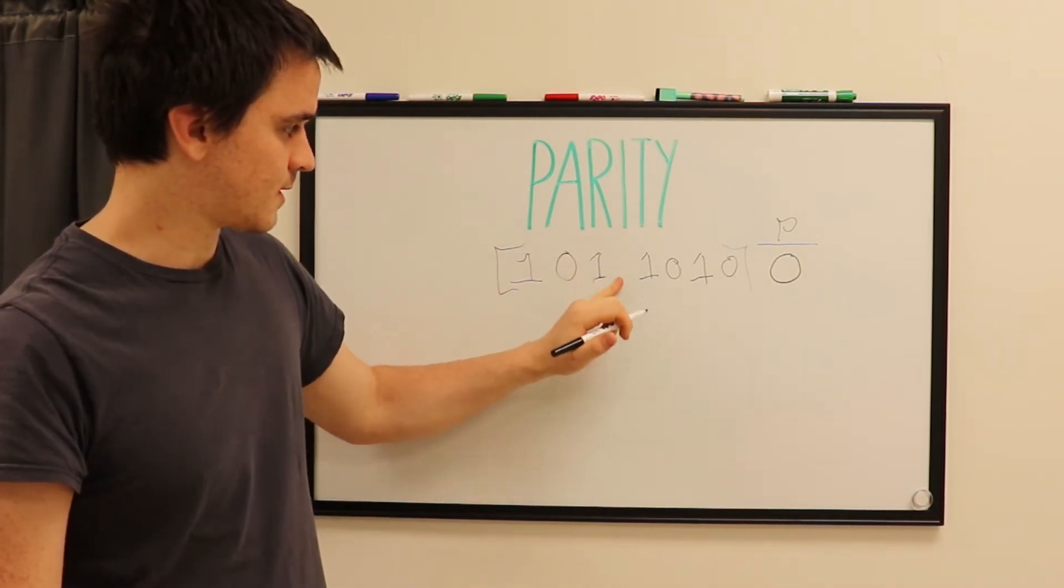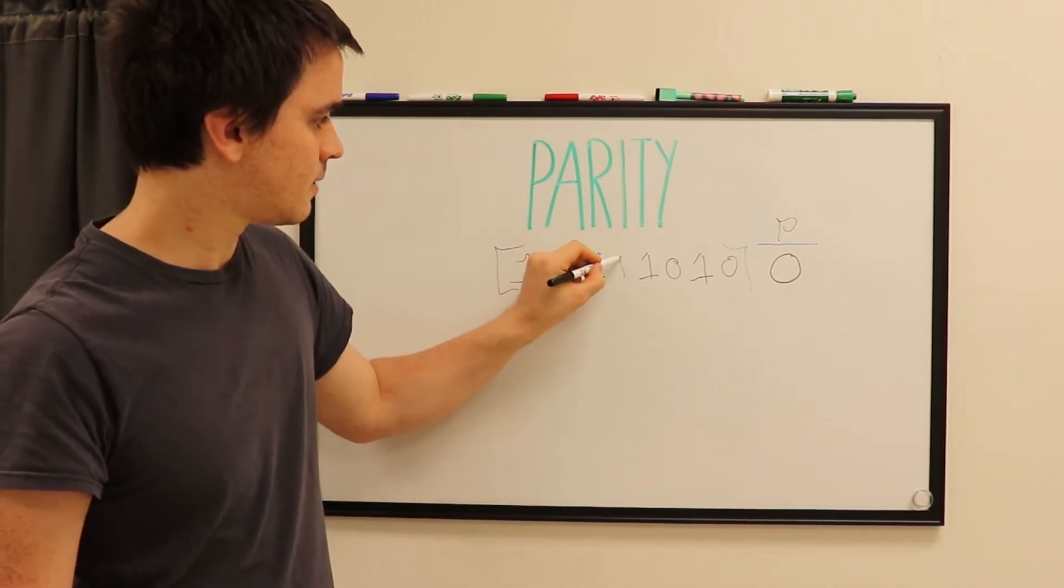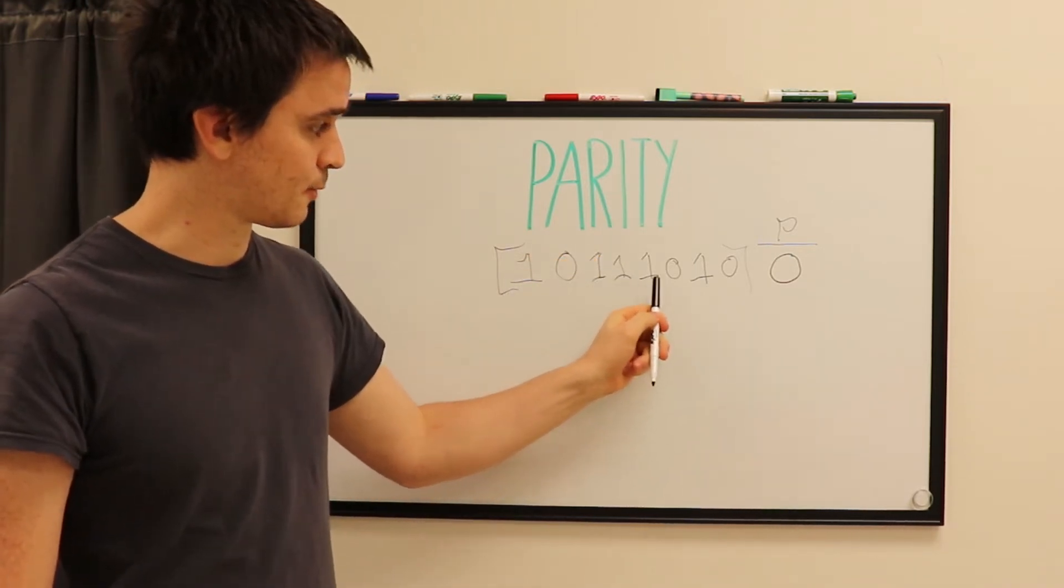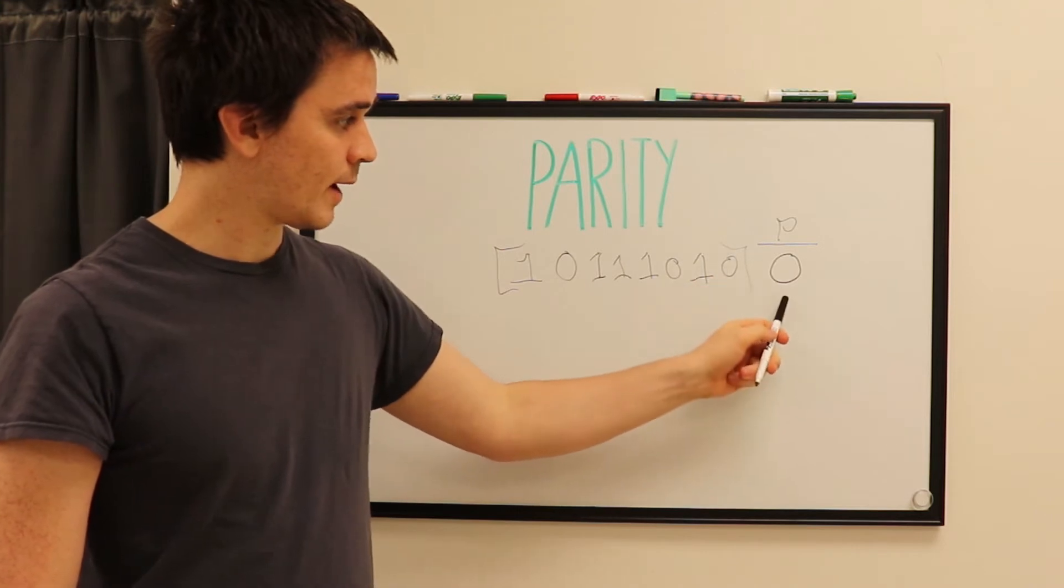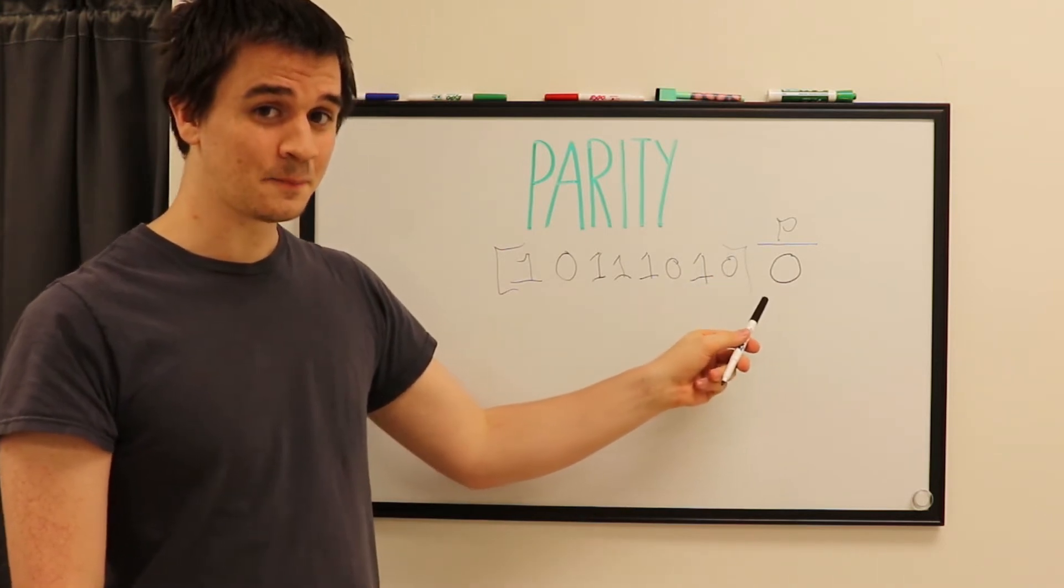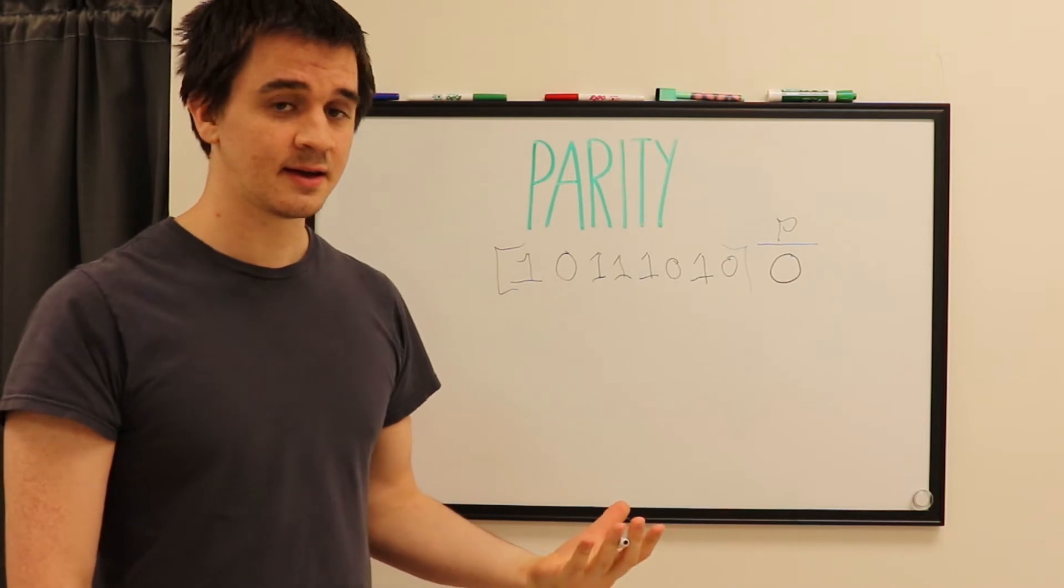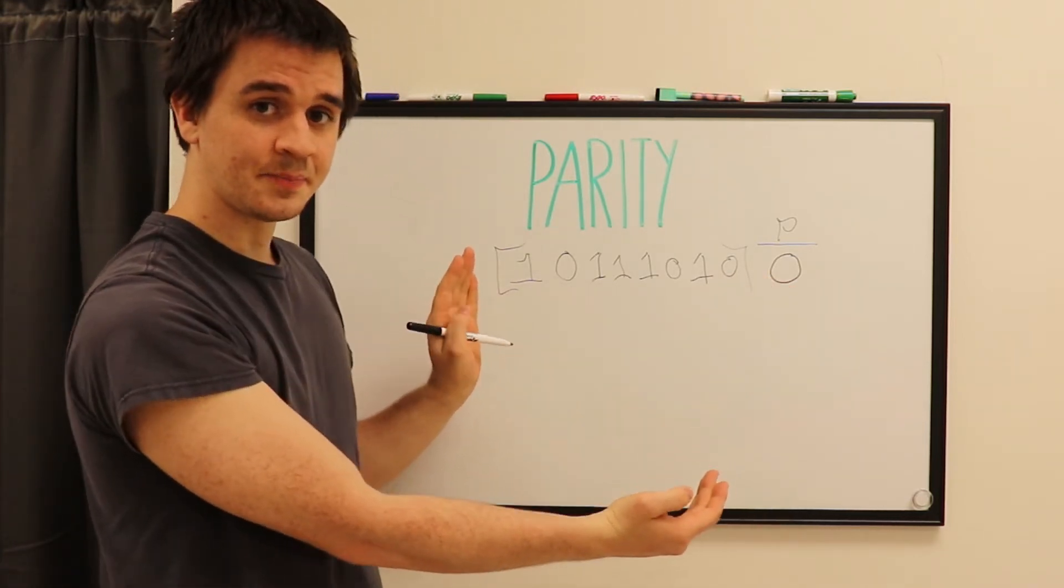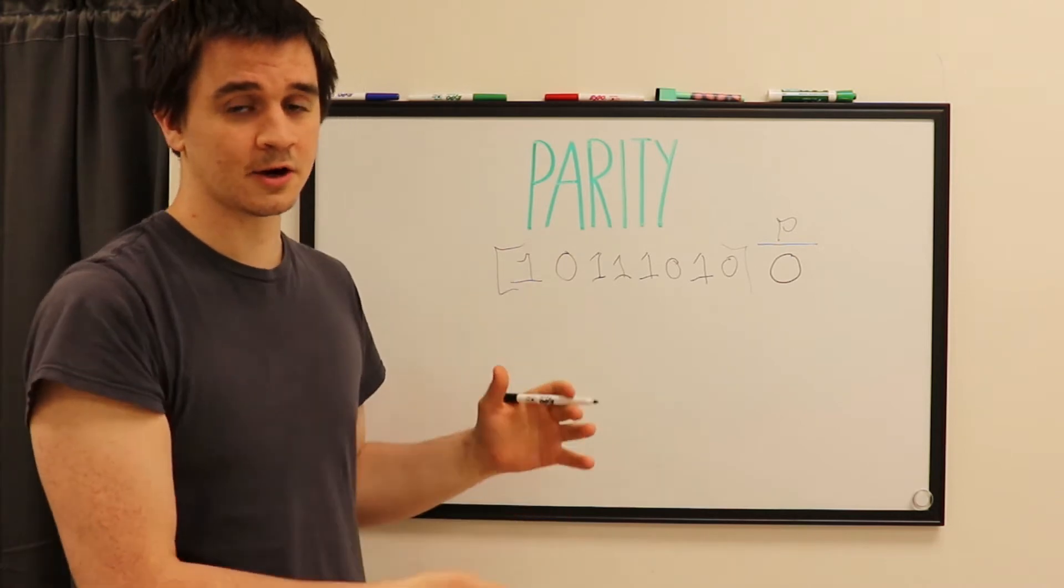If I was to change one of the zeros into a one and then calculate our parity again, one, two, three, four, five, well, now the parity bit is wrong. And when we transmit this data and the parity bit doesn't match up with our actual data, that's when a parity error occurs.